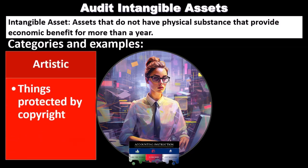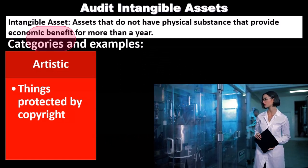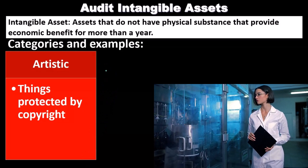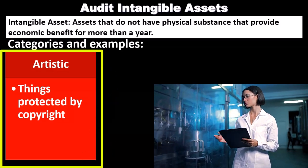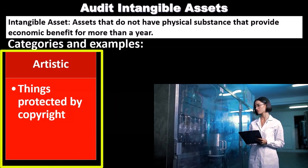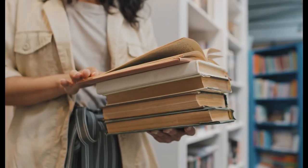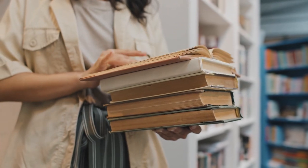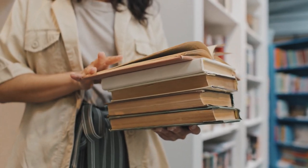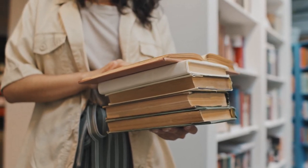As an auditor, the fact that these assets are not physical and not tangible can provide some problems in order to test for their existence. Types of intangible assets include artistic things — anything that has a copyright to it could be some form of intangible asset. The copyright itself is the intangible asset: it's the claim to the material, the idea, and the concepts, rather than the physical book or painting.